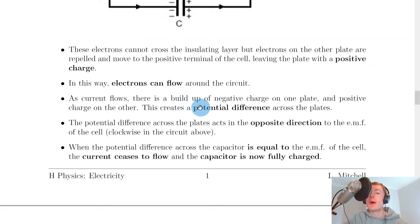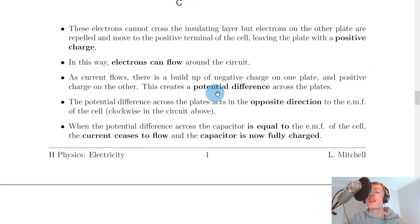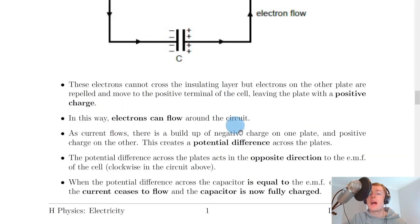As the current flows, there is a buildup of negative charge on one plate and positive charge on the other. This creates a potential difference across the plates. This happens because of the electric field set up between the positively and negatively charged plates. Remember, the electric field lines will go from positive to negative, and the existence of the electric field creates a potential difference.